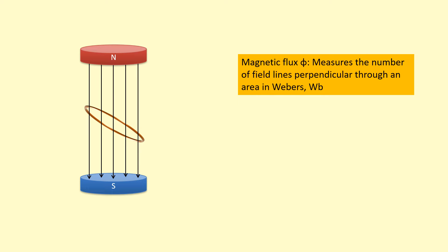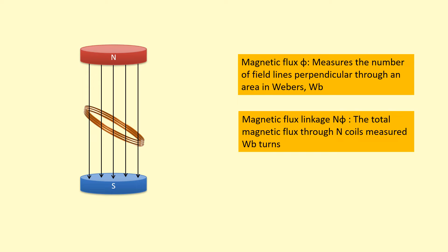Magnetic flux linkage is when you have more than one turn of the coil. So let's say we've got three turns of the coil. To get the magnetic flux linkage, you simply take the magnetic flux and multiply it by the number of turns. Magnetic flux is given the symbol Φ, and N times Φ is the magnetic flux linkage, given the units Weber-turns — sometimes just Webers on its own.